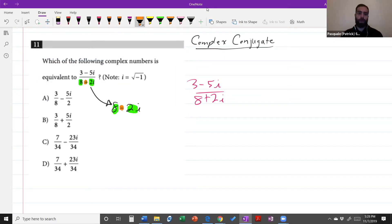We multiply by 8 minus 2i over 8 minus 2i, and this will help to get rid of the i. We have to distribute. Obviously we know that i squared is equal to negative 1, and as they tell us in the note, i is equal to square root of negative 1, so i squared is equal to negative 1.